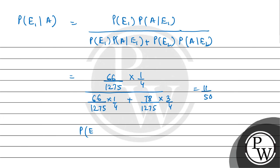So the probability that your lost card is a diamond is 11 by 50. This is our final answer. I hope you understood it well. Best of luck.